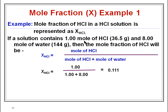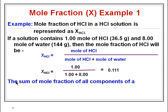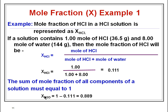Since mole fraction has no unit, the mole fraction of HCl for this solution equals 0.111. There is one more important thing: the sum of the mole fractions of all components of a solution must equal 1. So if HCl has a mole fraction of 0.111, the mole fraction of water equals 1 minus 0.111, which equals 0.889.